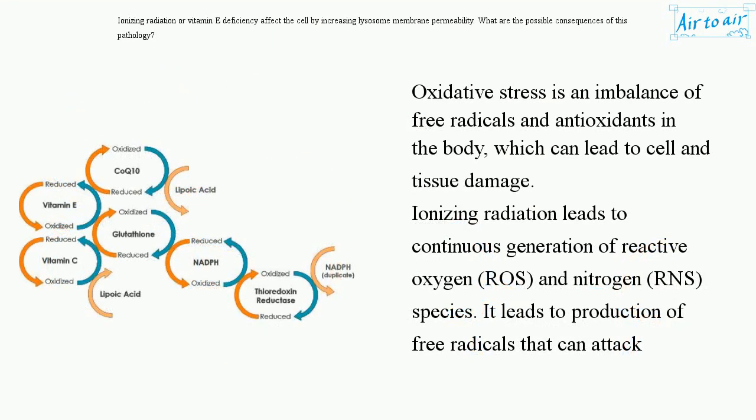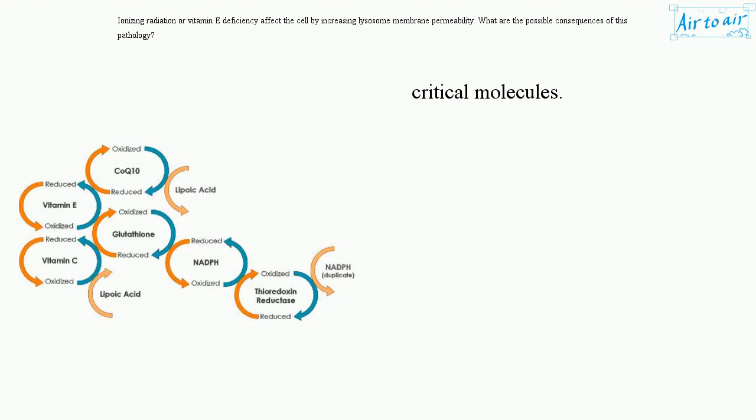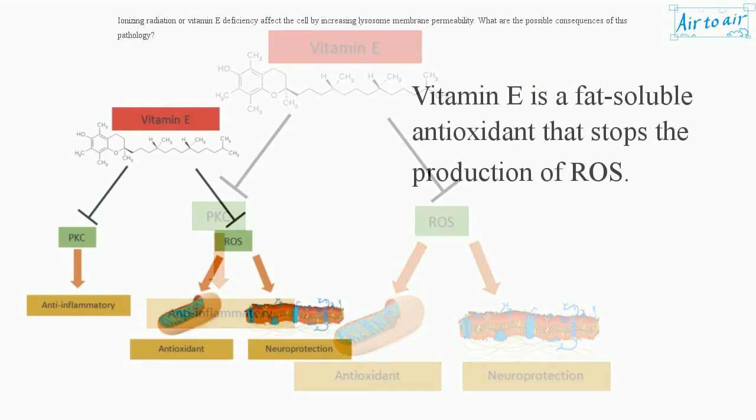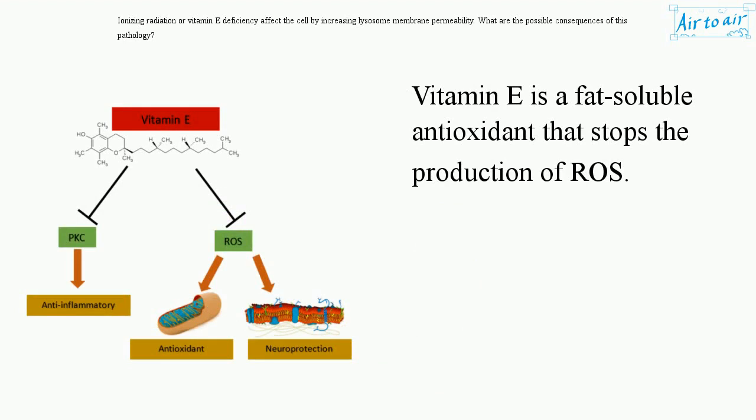Oxidative stress is an imbalance of free radicals and antioxidants in the body, which can lead to cell and tissue damage. Ionizing radiation leads to continuous generation of reactive oxygen and nitrogen species, producing free radicals that can attack critical molecules. Vitamin E is a fat-soluble antioxidant that stops the production of ROS.